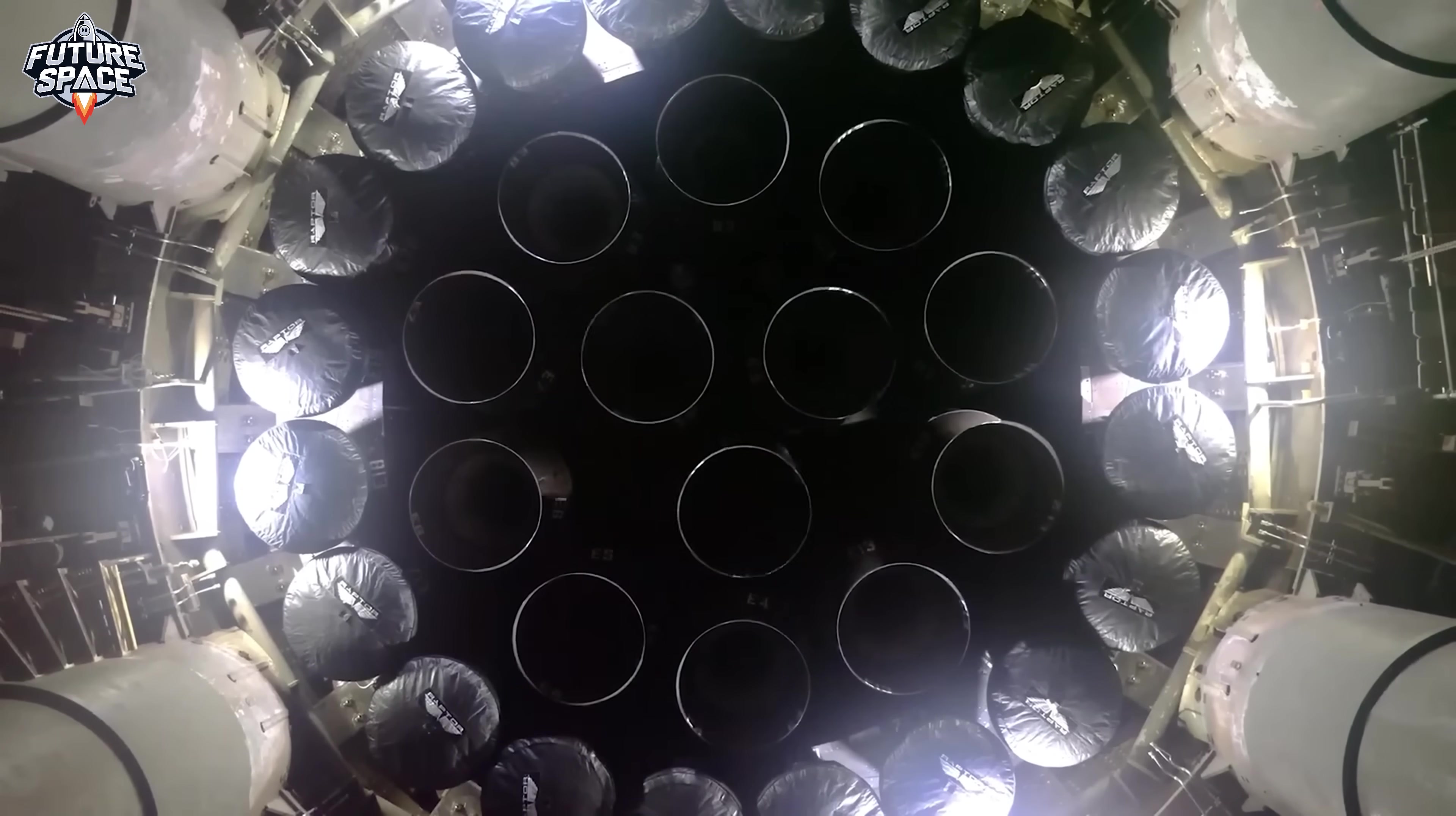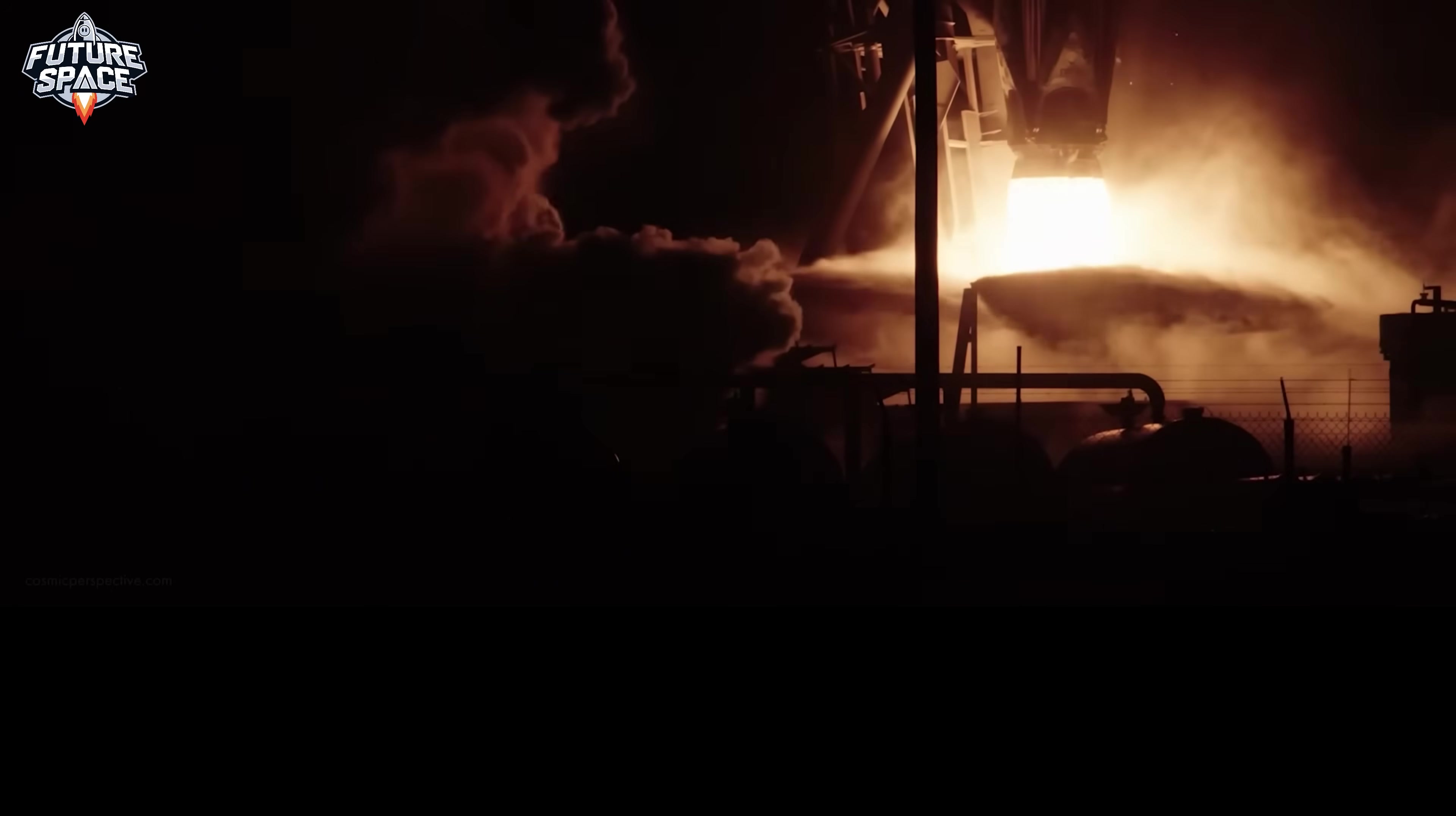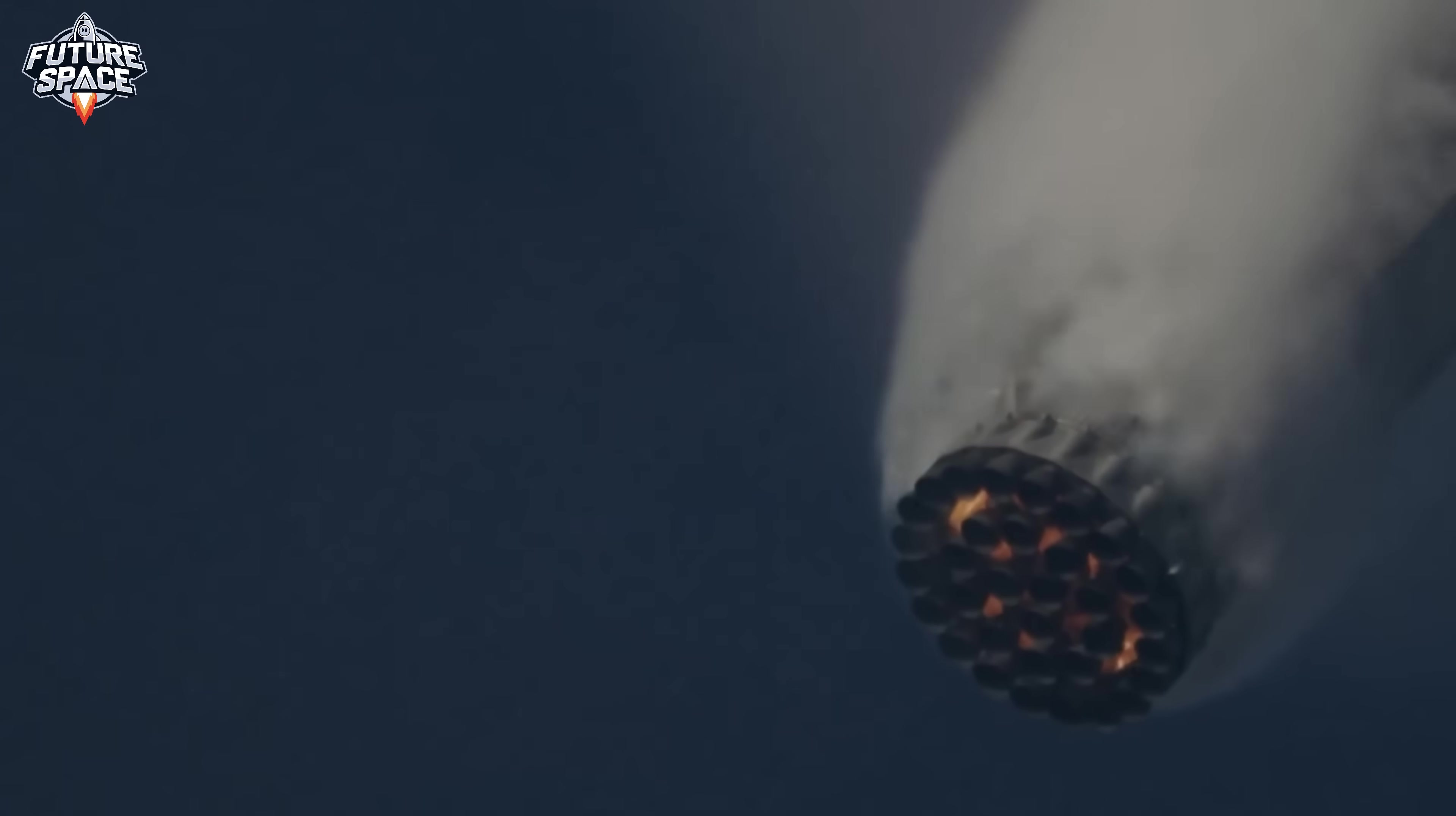Flight 7 started perfectly. All 33 engines roared to life. The booster separated cleanly. Ship 33 was climbing towards space when something went wrong. At exactly seven minutes and 38 seconds, the first center engine died. Then another. Then another. Within 30 seconds, five of six engines had failed, sending the $200 million ship tumbling toward Earth like a broken firework. But here's the shocking part. SpaceX knew this would happen.